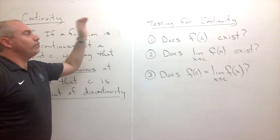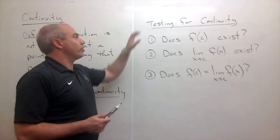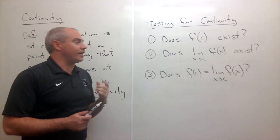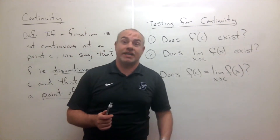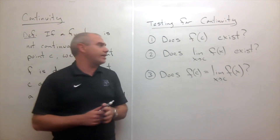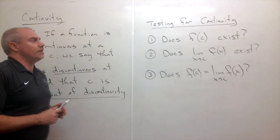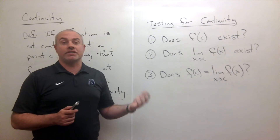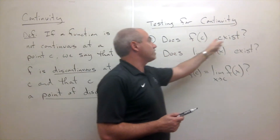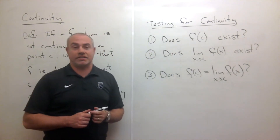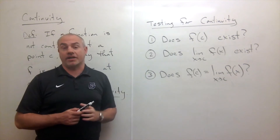How do you figure out if a function is continuous at a point c? If we're testing for continuity at c, there are three things to test. First, ask: does the functional value exist at c? If it does, great — move on. If it doesn't, you're done and it's not continuous.